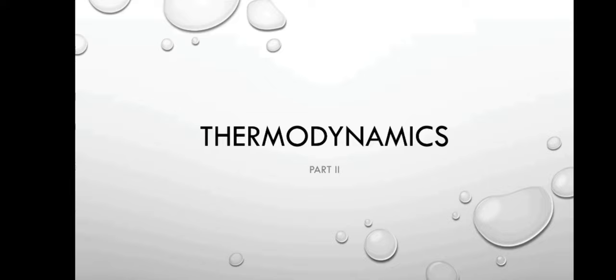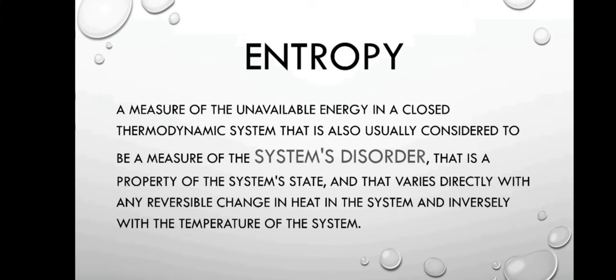Let's continue our discussion regarding thermodynamics, topic 6: Entropy. Entropy is a measure of the unavailable energy in a closed thermodynamic system, usually considered to be a measure of the system's disorder. It is a property of the system's state and varies directly with any reversible change in heat in the system and inversely with the temperature of the system.